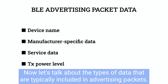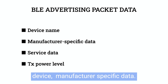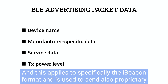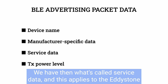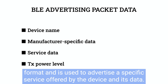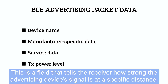Now let's talk about the types of data that are typically included in advertising packets. The most common ones are the device name, which is just the name of the device; manufacturer-specific data, which applies to the iBeacon format and is used to send proprietary data unique to a specific manufacturer; service data, which applies to the Eddystone format and is used to advertise a specific service offered by the device and its data; and finally, the TX power level, a field that tells the receiver how strong the advertising device's signal is at a specific distance.